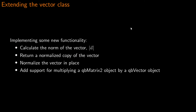I want to build on the work from last week with the QB vector class to add some new functionality and specific operators for vectors. First, I want to be able to calculate the norm, or magnitude, of a vector. I also want a function that returns a normalised copy of the vector, and a function that normalises the vector in place. Additionally, I want to add support for multiplying an instance of the QB matrix 2 class by an instance of the QB vector class, which requires making some changes to the QB matrix 2 code.